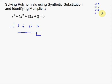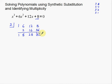If you're good with synthetic substitution, you can just try a few numbers. I'm going to try positive 2. I bring down the 1, then 1 times 2 is 2; 6 plus 2 is 8; 8 times 2 is 16; 16 plus 12 is 28; 28 times 2 is 56; 56 plus 8 is 64. That doesn't work — I have a remainder of 64, which means x minus 2 does not divide evenly.